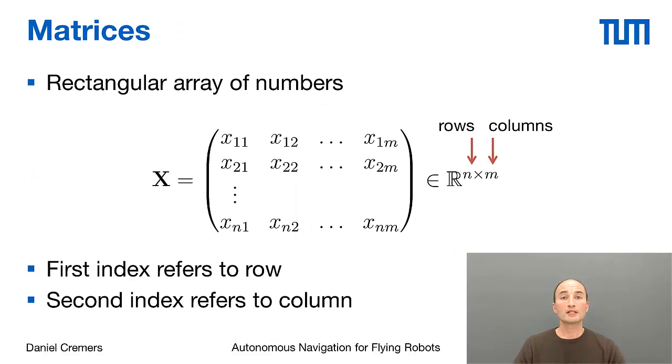For matrices, we will use the following convention. An n by m matrix is an array of numbers where n denotes the number of rows and m the number of columns. It has a lot of components X_ij, where the first index i refers to the row and the second index refers to the column.